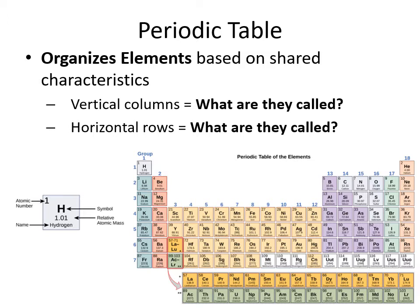On the periodic table, vertical columns going up and down are called groups. Group one would be H all the way down to Fr; group two would be Be all the way down to Ra. The horizontal rows are called periods. The first period differs from all others in that it's the only one that has two elements in it. Make sure you're comfortable: vertical columns are the groups, and horizontal rows are the periods.